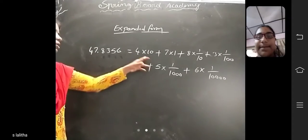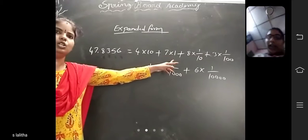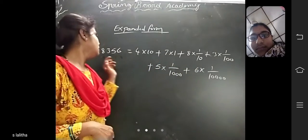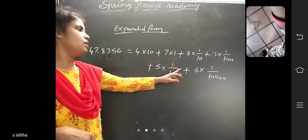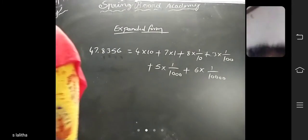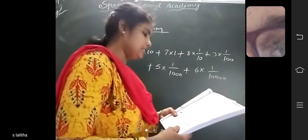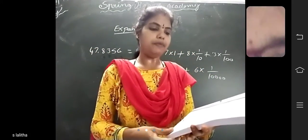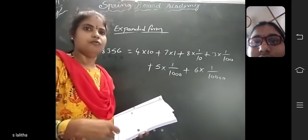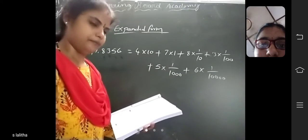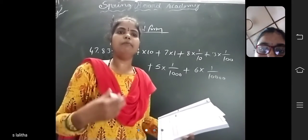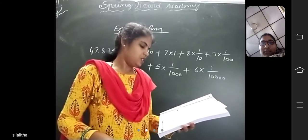So the expanded form is: 4×10 + 7×1 + 8×(1/10) + 3×(1/100) + 5×(1/1000) + 6×(1/10,000). Note: in a decimal, the place value of a digit decreases 10 times from the decimal point to the right. The decimal digits are read one by one, individually. For example: 253.847.